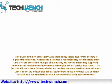Time Division Multiple Access is a technology that is used for the delivery of digital wireless service. What it does is divide a radio frequency into time slots; these time slots are allocated to multiple calls. Basically, you have one frequency supporting numerous and simultaneous data channels. GSM digital cellular service uses TDMA. It is a fast and efficient avenue for transmission and involves the use of satellite communications. TDMA is one of the oldest digital cellular technologies in use in America, Asia and New Zealand. It is not very flexible and this seriously limits its digital advancement.